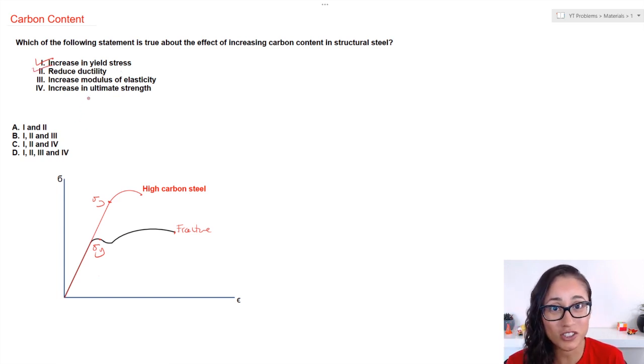Now for modulus of elasticity, it actually does not get affected if we increase carbon content in the steel. And let me tell you why. So modulus of elasticity represents the slope of this graph, right? It's the elastic linear zone. And so if you guys see here that the slope of this graph is the same slope as this graph, right? And so your modulus of elasticity actually does not change. So here this is wrong—it does not increase or decrease, it stays the same.